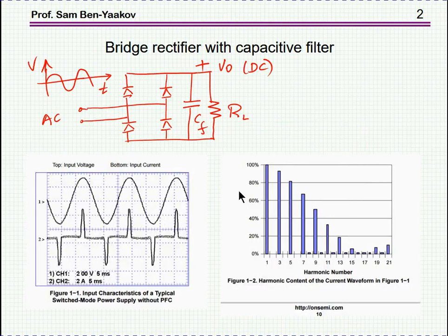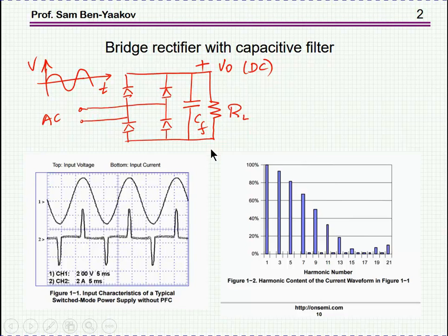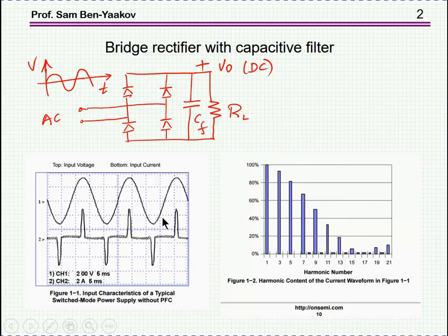The classical approach for rectifying an AC voltage was to use a bridge diode followed by a capacitive filter. This RL represents the load. Since the capacitor is being charged, the current will flow only when the input voltage is higher than the voltage across the capacitor. So typically, this is the current of the line, this is the voltage of the line, and only around the peak value of the voltage we're going to see this current.